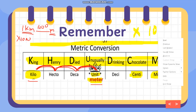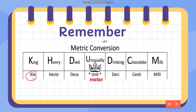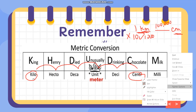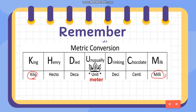What about kilometer to centimeter? From kilometer to centimeter, counting the movements: tens, hundreds, thousands, ten-thousands, hundred-thousands — five movements. So 1 kilometer multiplied by 100,000 equals 100,000 centimeters. The relationship: in 1 kilometer, there are 100,000 centimeters. For kilometer to millimeter, counting movements gives us six steps — up to one million. So 1 kilometer is equivalent to 1,000,000 millimeters.